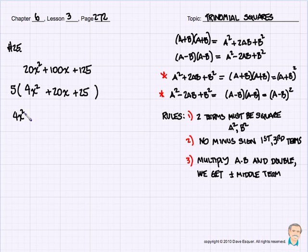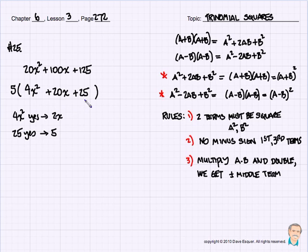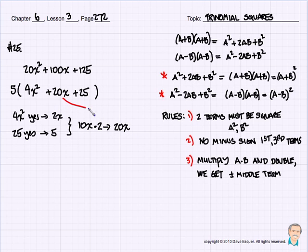Is 4x squared a perfect square? Yes — that gives us 2x for our a term. Is 25 a perfect square? Yes — that gives us 5 for our b term. Rule 2: there's no minus sign between the first and third terms, no problem there. Now multiplying a times b: 2x times 5 gives us 10x, and doubling that gives us 20x — which turns out to be exactly the middle term.